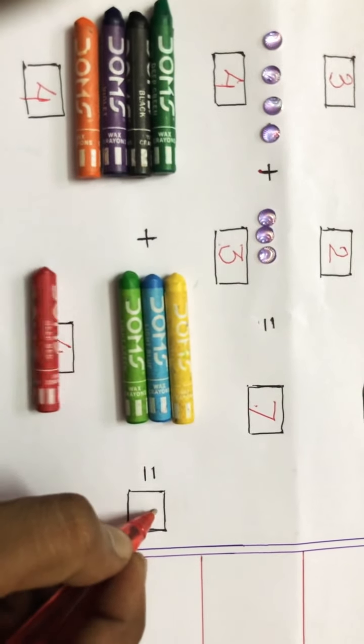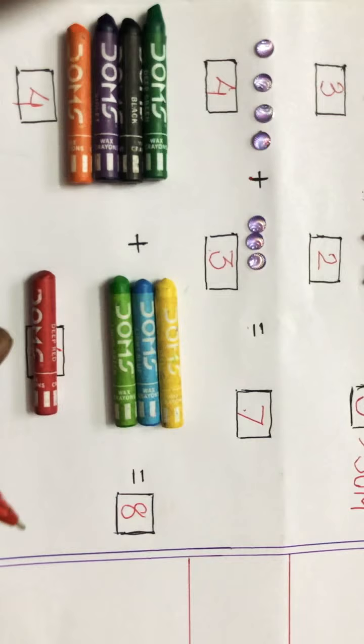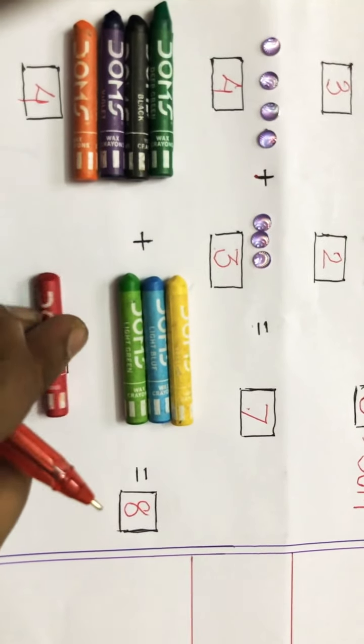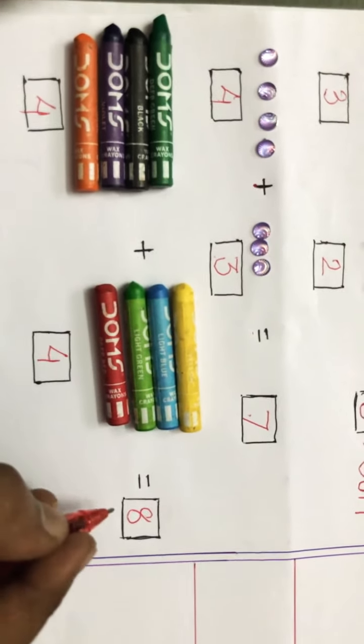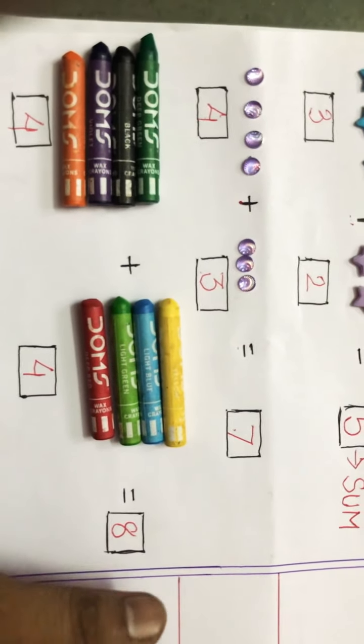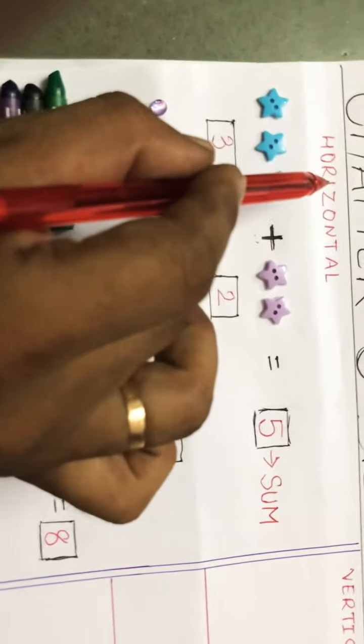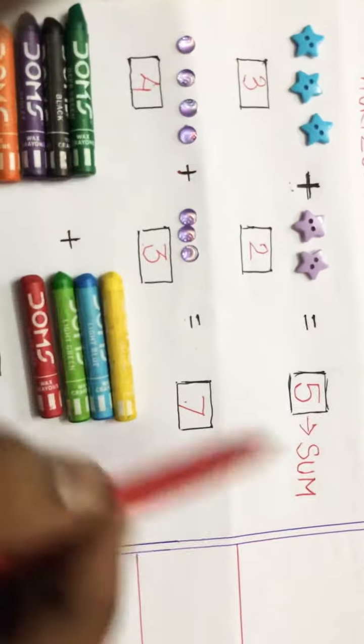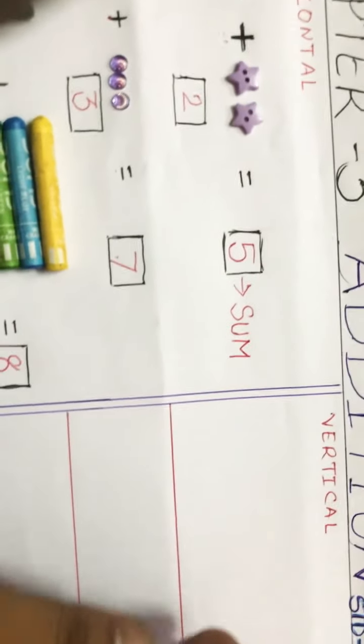So answer will be eight, or we call it as sum. So four plus four answer will be eight. This is called horizontal, which is sleeping. Now we will do the vertical, which means standing.